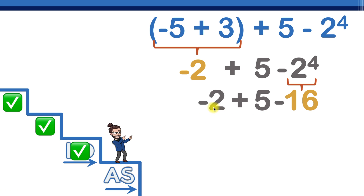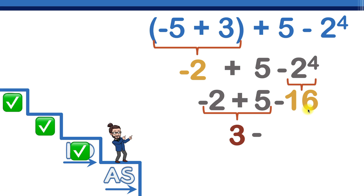Step four is addition or subtraction from left to right. Negative two plus five — that's like saying you owe somebody two dollars but you have five. You have enough to pay them back and you'll have three dollars left over, so this equals positive three. I'll bring down the minus sign and the sixteen.